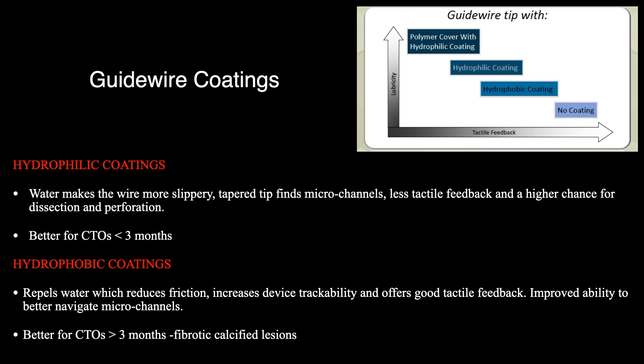Guide wires have various polymer coverings with hydrophilic and non-hydrophilic coatings. The more hydrophilic the guide wire, the more slippery it is — it likes to find micro channels, but you get less tactile feedback and a higher chance of dissection and perforation. These are often better for CTOs less than three months old. Guide wires can also have hydrophobic coatings, which repel water, reduce friction, increase device trackability, and provide good tactile feedback — improving navigation through a CTO. Operators often prefer these for more fibrotic and calcified CTOs.